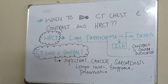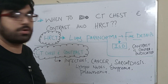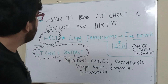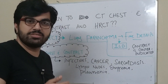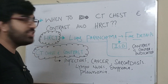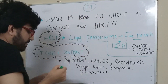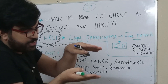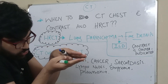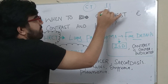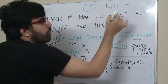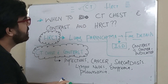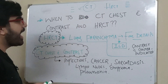Today I'm going to talk about the CT chest — when to go for CT chest with contrast versus HRCT, and what is the basic difference between them. In a standard CT, the sections are taken at a longer distance from one another, compared to HRCT where sections are taken very close to one another, about 0.5 to 1 mm apart.